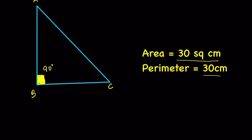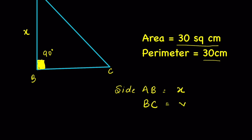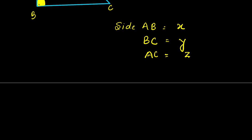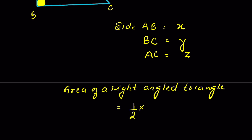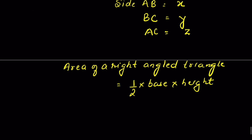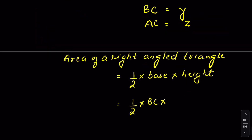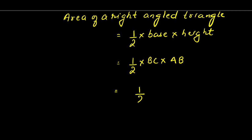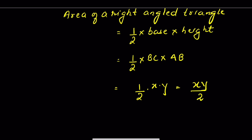Let us consider side AB is equal to X, side BC is equal to Y, and AC is equal to Z. Now as per the formula of a right-angled triangle, area is equal to 1/2 times base into height. Here base is BC and height is AB, so area equals 1/2 times X times Y, or XY upon 2.